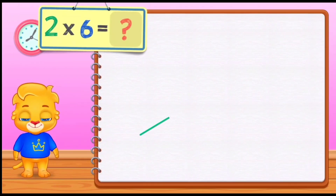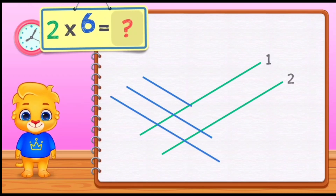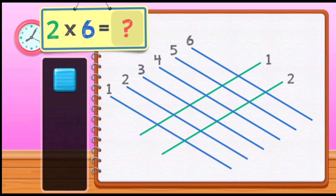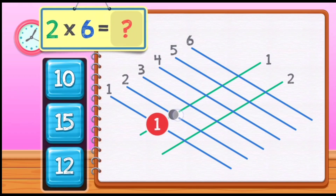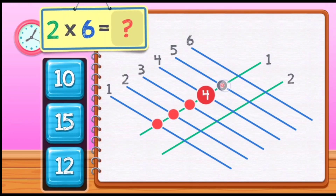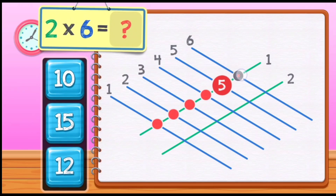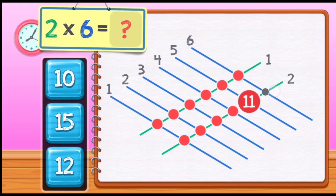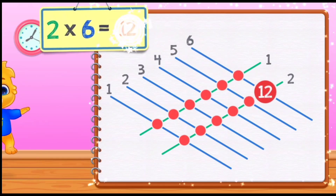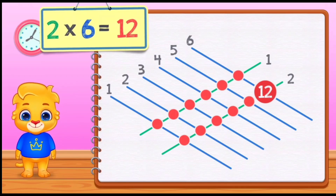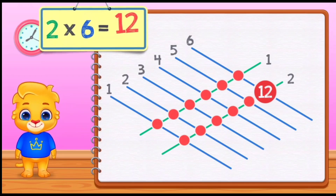Two times six equals: one, two, three, four, five, six, seven, eight, nine, ten, eleven, twelve. Two times six equals twelve.